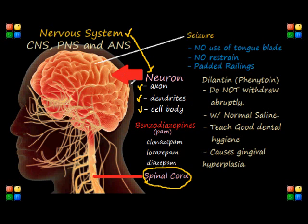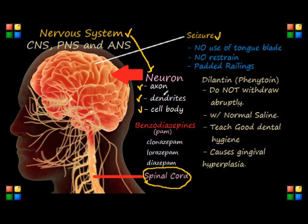When we have an abnormal chaotic discharge within the neuron system of the brain, we call this a seizure. There are two types of seizures: general seizures, which are composed of tonic-clonic and absent seizures, and then there are partial seizures, meaning they are either called simple or complex seizures.